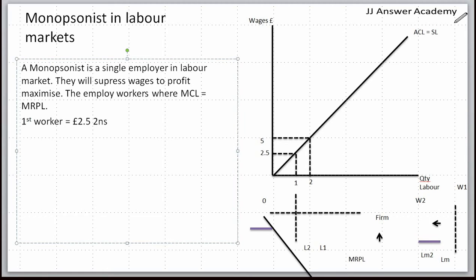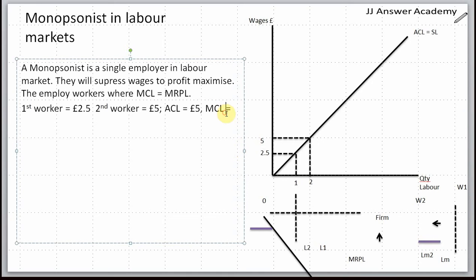In this example, ACL at five pounds would be five pounds because you're paying both workers five pounds each. Average cost of labor is five pounds. Your MCL, marginal cost of labor, is the increase in total cost by employing one more worker. For the first worker you would have paid 2.5, and for the second worker you're paying each worker five pounds.